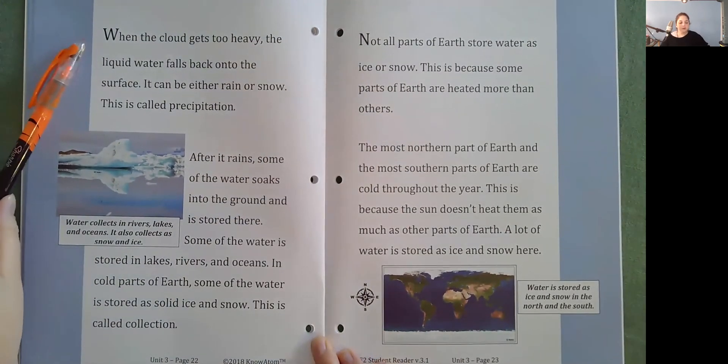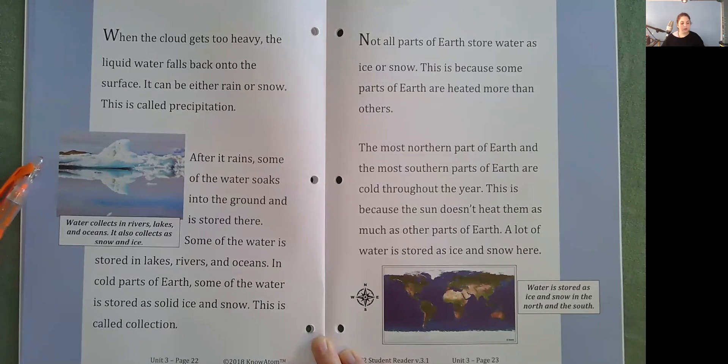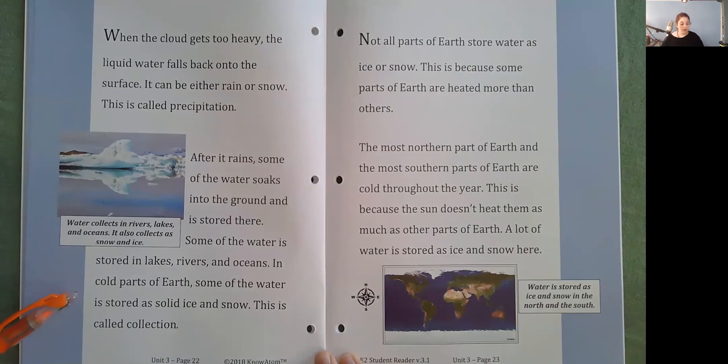When the cloud gets too heavy, the liquid water falls back onto the surface. It can be either rain or snow. This is called precipitation. After it rains, some of the water soaks into the ground and is stored there. Some of the water is stored in lakes, rivers, and oceans. In cold parts of Earth, some of the water is stored as solid ice and snow. This is called collection.